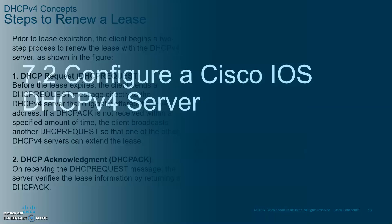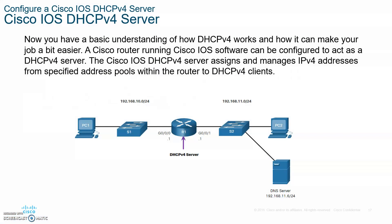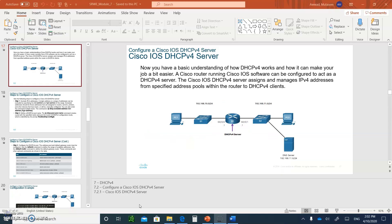Now let's talk about the configuration. Assume you have a network — this router is going to act as a DHCP server and PC1 is going to get an address. The LAN has a bunch of clients connected to a switch, and they want to get an IP address from the router which is acting as the DHCP server.